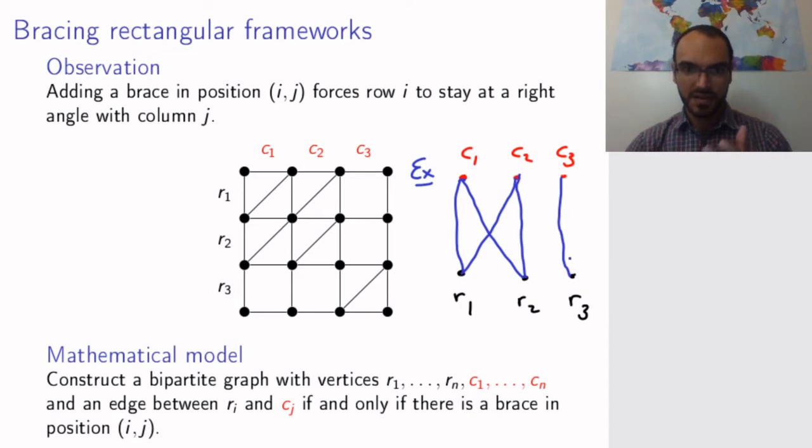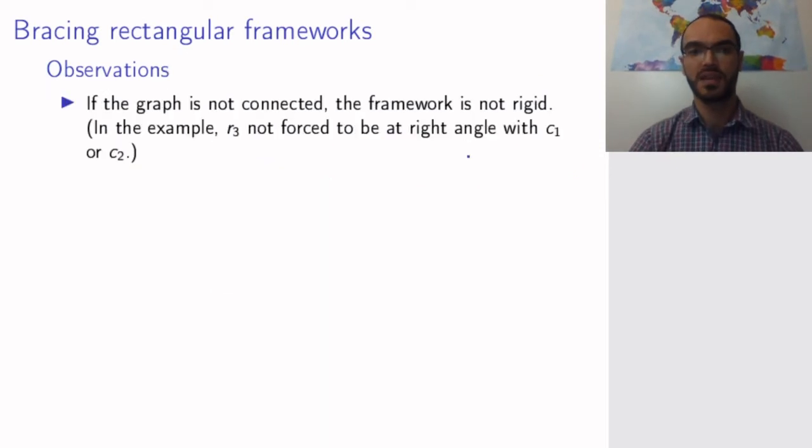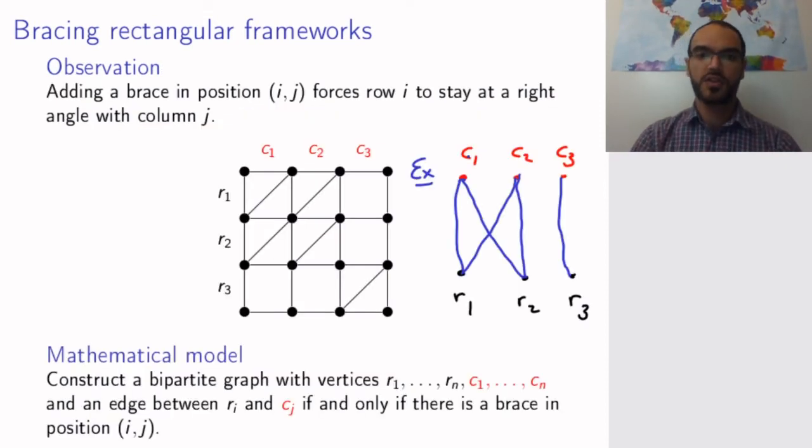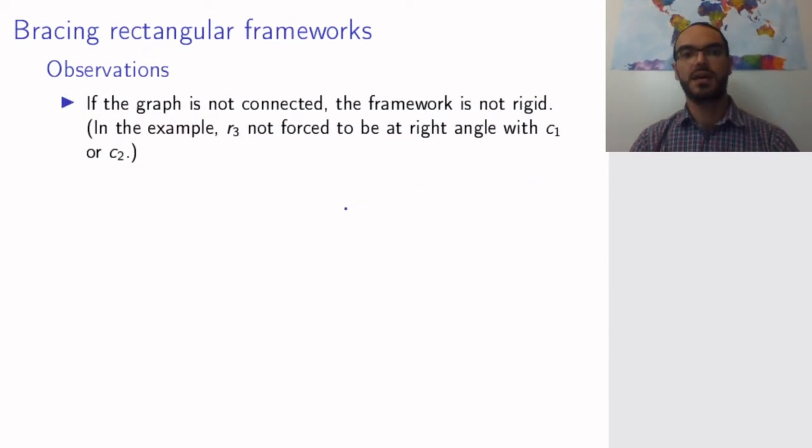Well, it seems to me intuitively that rows 1 and 2 will stay at right angle with columns 1 and 2, and row 3 will stay at right angle with column 3, but there is really nothing connecting the rigidity in this position and in this position. This is reflected in the fact that this part stands by itself—it's not connected to this other part. Indeed, what we observe is that if the graph is not connected, the framework is not rigid. To be precise, note that here column number 3 is not at all forced to stay at right angle with row 1 or row 2.